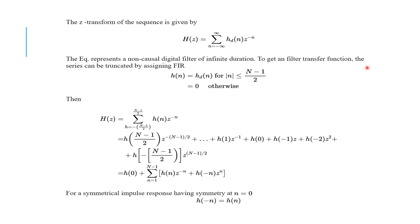In order to get a filter transfer function, the series can be truncated by assigning a FIR filter. The filter transfer function h(n) is equal to hd(n) for |n| ≤ (N−1)/2, and 0 otherwise. This can be written in finite summation form: summation from n = −(N−1)/2 to (N−1)/2 of h(n) · z^(−n).